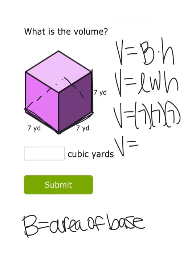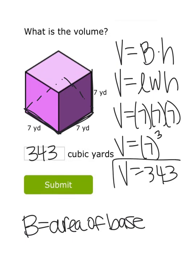In this case, or with any cube, you really can just cube whatever side you're given, and that would tell you the volume. So 7 cubed would give us 343. So the volume of this cube is 343 cubic yards.